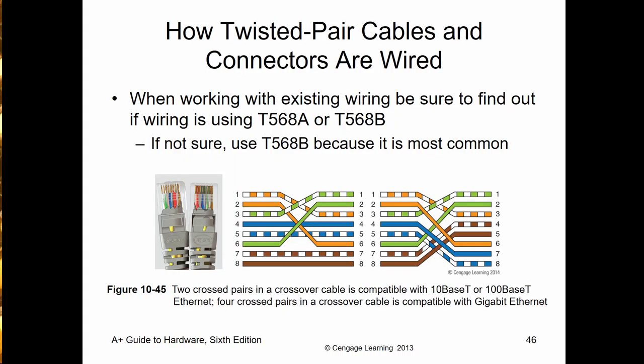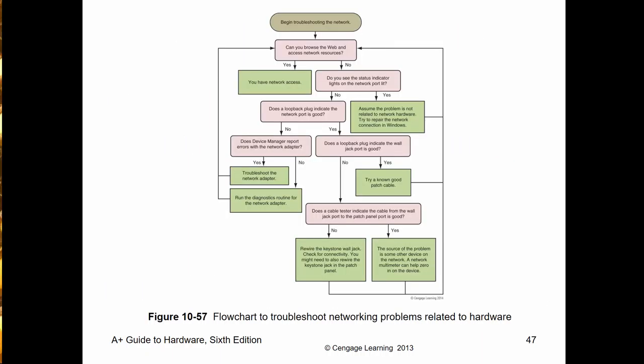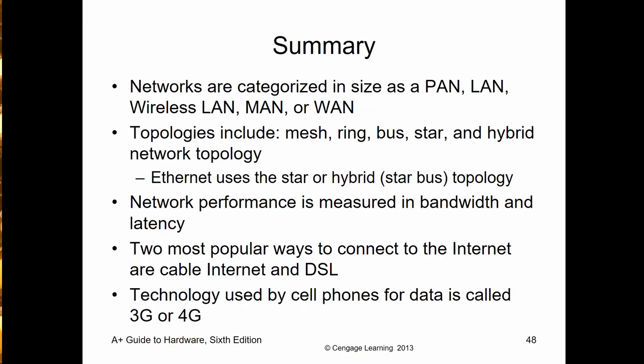Looking at the different cables, pins one, two, three, and six are the ones that should be communicating. Basic troubleshooting: do you have internet access? Is it the wire? It's the wire, and you flow through the charts. That's it for this chapter — thank you very much.